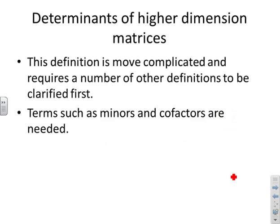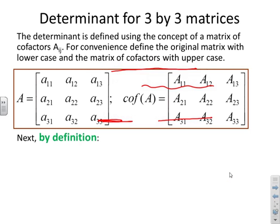What we need to do now is consider higher dimension matrices. Unfortunately, the definition is a bit more complicated for higher dimension matrices, and therefore we require some other definitions first before we can move to the determinant. We're going to need to understand terms such as minors and cofactors — you're going to have to learn what a minor and a cofactor are.